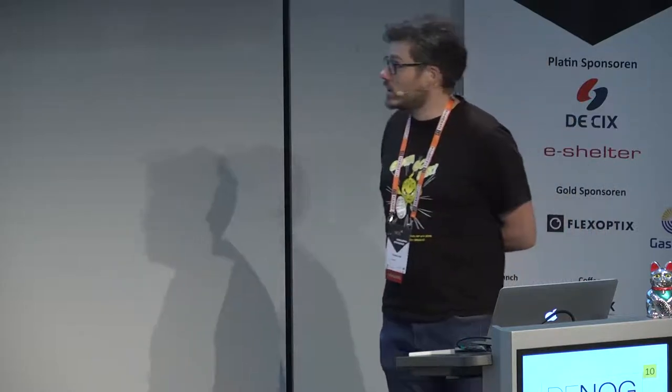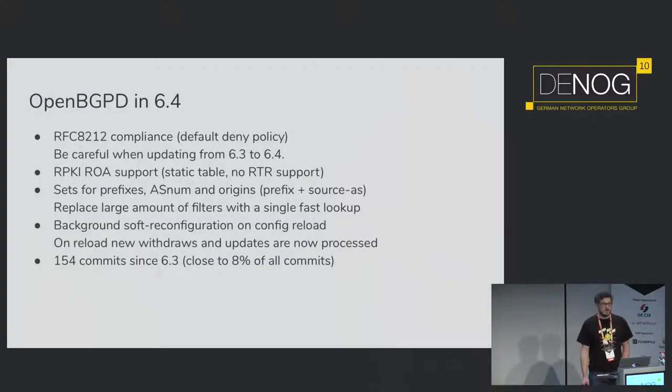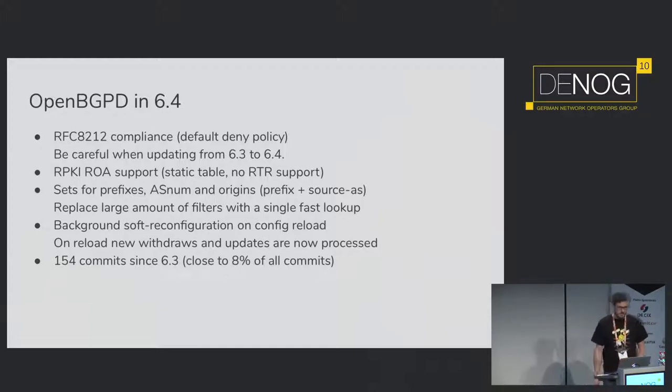The other thing we did is address a lot of code that was running synchronously. When you did a reconfiguration or a peer came up, many events were running in the foreground, so updates got blocked until that was finished. Most of them are now running in the background, so withdrawals and updates from other peers are processed alongside those other operations. All in all, we did over 150 commits since OpenBSD 6.3 — about 8% of all commits — which shows that this funding was very successful and that a lot of work happened on OpenBGPD.